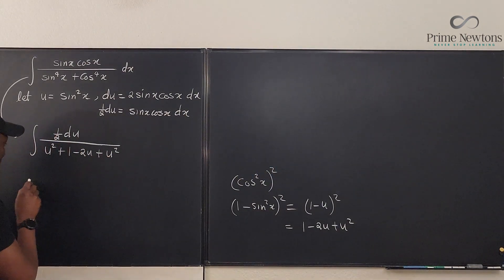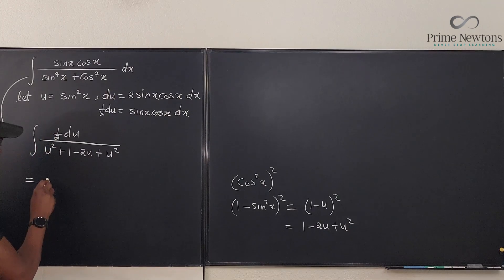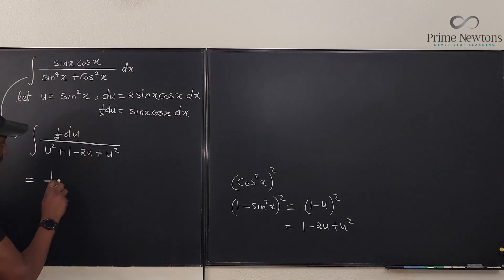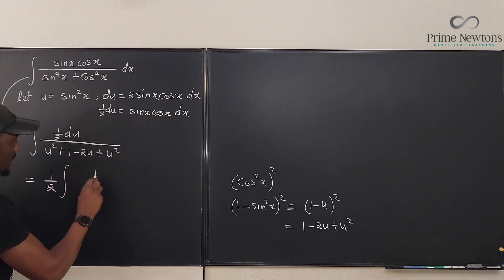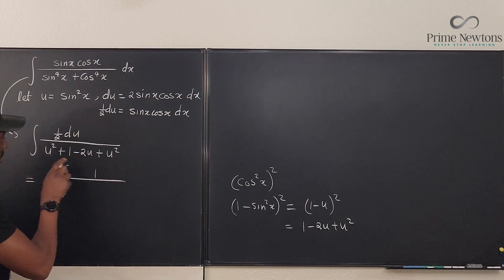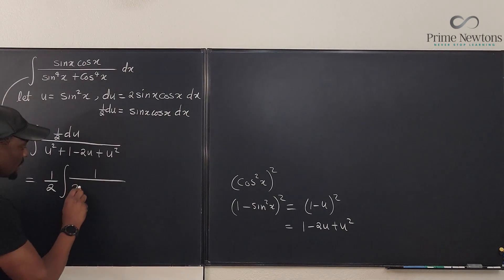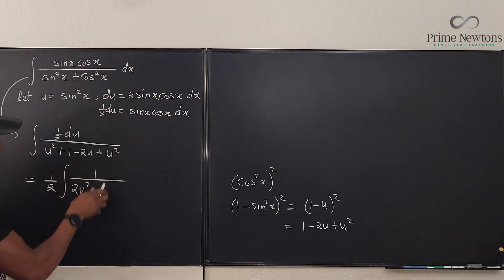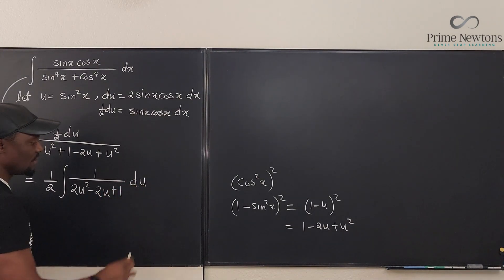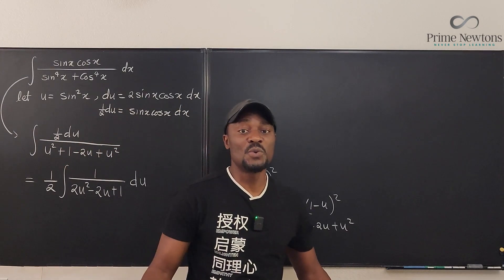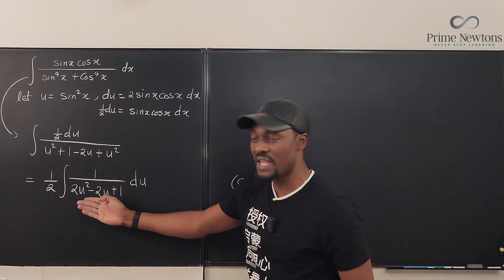It has become something easy for everybody to do. Let's clean this up. So this is going to be equal to, I'm going to pull this one-half to the back, so it is one-half the integral of 1 over, what do we have? We have 2u² - 2u + 1 du.